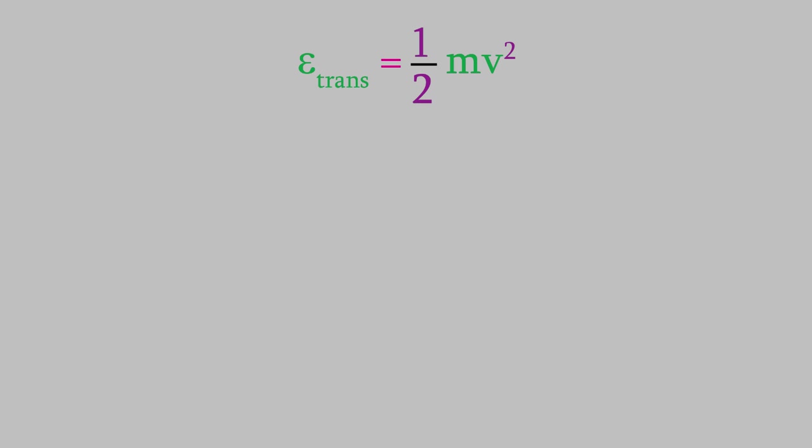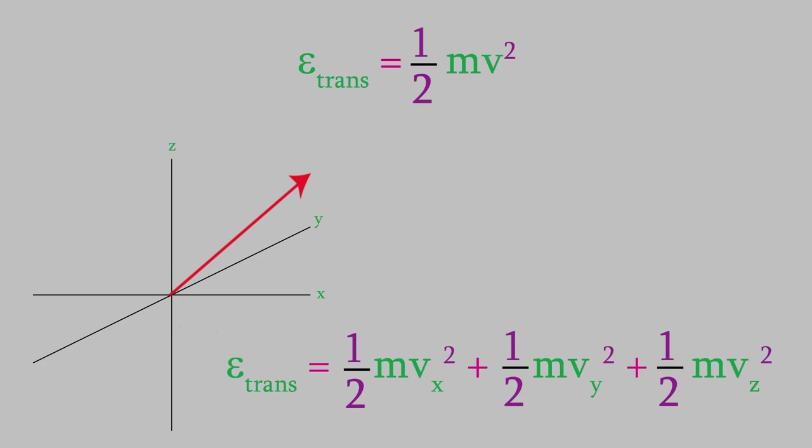First, though, let's remember that the velocity is a vector quantity, where the velocity vector is composed of velocities along the x, y, and z axes. That means we can rewrite this by splitting the kinetic energy into three separate terms, one each for the velocity along the x, y, or z axes.